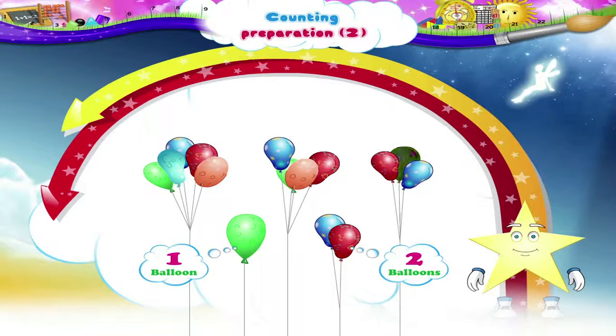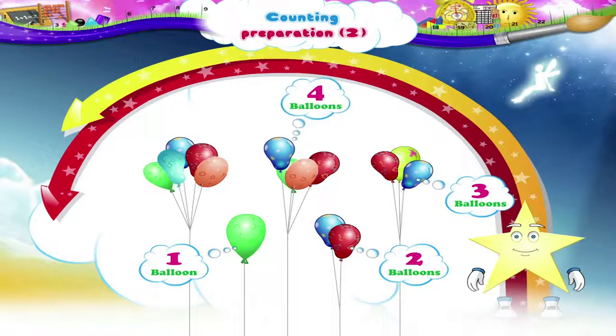1, 2, 3, these are 3 balloons. 1, 2, 3, 4, these are 4 balloons. 1, 2, 3, 4, 5, these are 5 balloons.